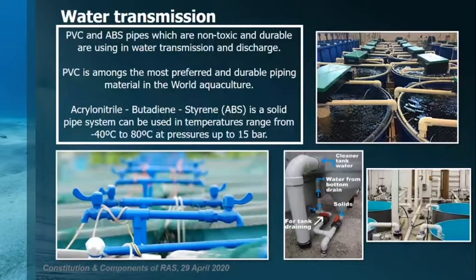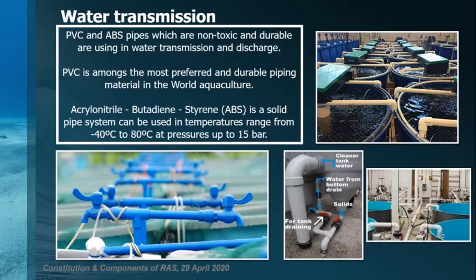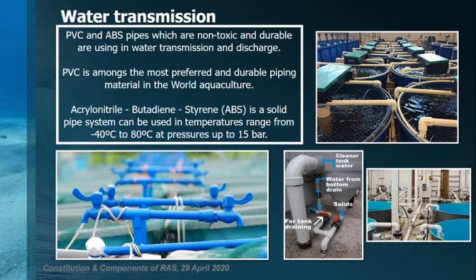PVC and ABS pipes, which are non-toxic and durable, are used in water transmission and discharge. PVC is among the most preferred and durable piping materials, and also the cheapest one in aquaculture. You can use very different piping styles considering your plan and budget. ABS pipes — acrylonitrile butadiene styrene — is a solid pipe system that can be used in very different temperature ranges. If you have severe temperature changes in your system, you can use this pipe system.